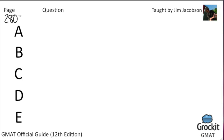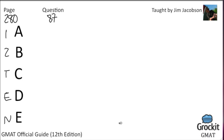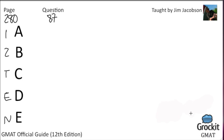We're on page 280 starting with question number 87. As I tell everybody every time, because I don't know who's new to each broadcast, for the data sufficiency section I write down what each answer choice stands for down the side. It serves as a helpful reminder. Statement one stands for one alone sufficient; two stands for statement two alone; T stands for together; E stands for either; and N stands for neither. On my scrap paper I write 1, 2, 10, 1, 2, 10 rather than A, B, C, D, E for crossing off answer choices.